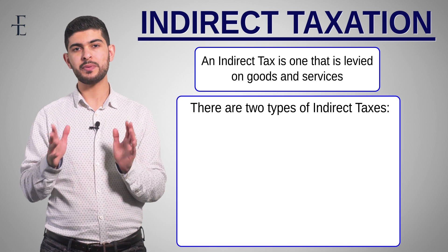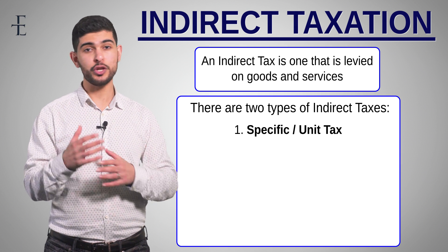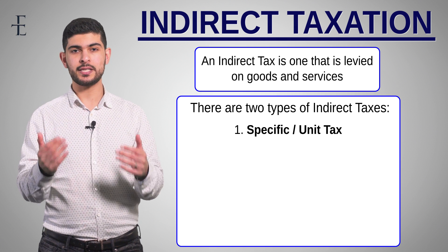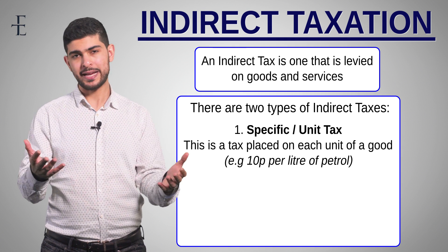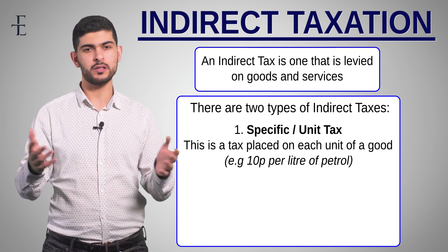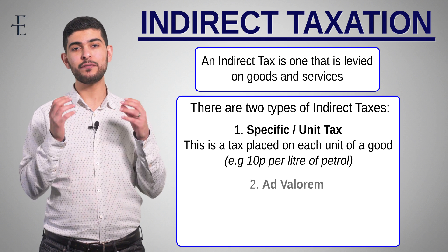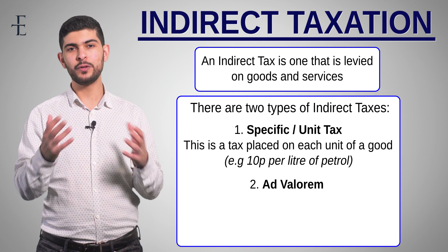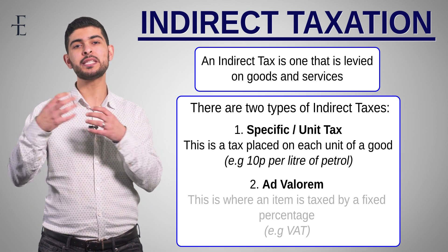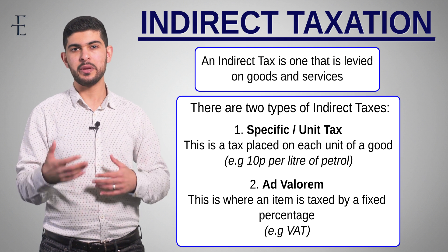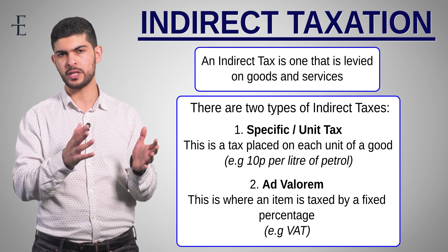There are two types of indirect taxes that you need to know. The first has two names: a specific tax or a unit tax — exactly the same thing. A specific tax is where they tax each unit of an item by a certain fixed amount, for example, packets of cigarettes — every packet could have a tax of five pounds or whatever it might be. The other type is an ad valorem tax, which is just a fancy way of saying VAT. That's a good example — it's where they tax as a percentage. VAT at the moment is 20%, meaning every single item you buy has a percentage of 20% added on top. It's already priced in, so you don't really notice it when you go to the shops.